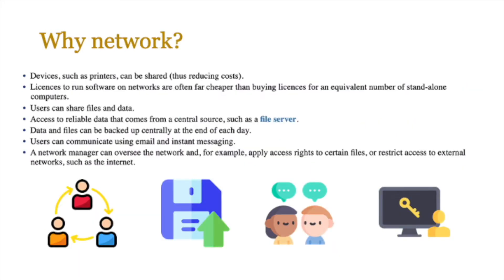Why network in the first place? When computers were all alone, chances are you had to buy your own printer and none of the data on your computer could be shared very easily with others. Even software used to be quite expensive. So the reason we network is that we can share these resources, which means we can reduce costs. Licenses to run software are often cheaper, users can share files and data, and there's access to reliable data from a central source such as a file server. Data can be backed up at the end of each day, which is very difficult with standalone computers - with a central server we can do it all together.